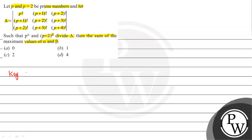The key concept we will use here is that n factorial equals 1 times 2 times 3 times 4 up to n, and n factorial equals n times (n minus 1) factorial. We will use this concept to solve the question.